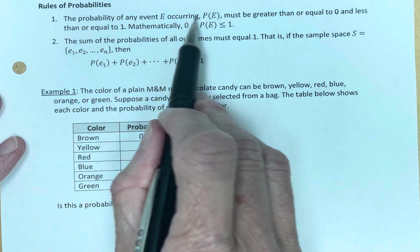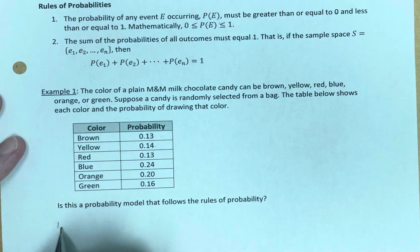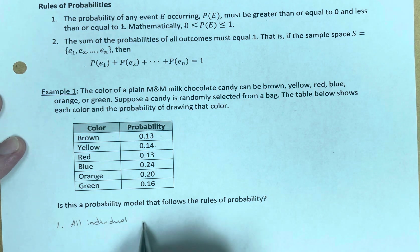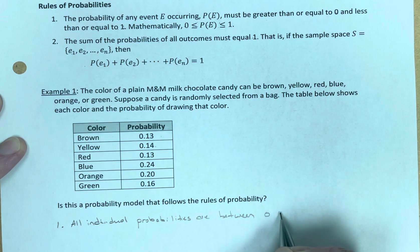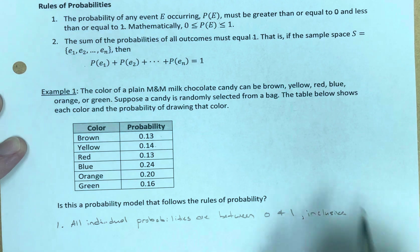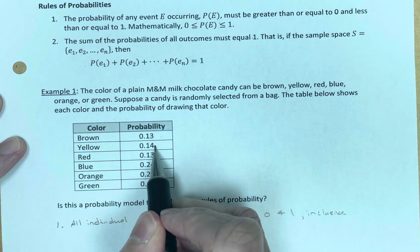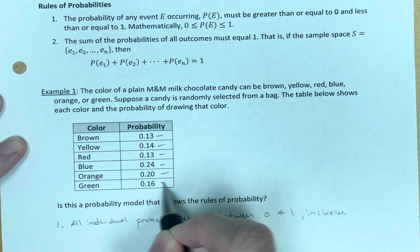Rule number one. The probability of any event occurring must be greater than or equal to zero and less than or equal to one. So rule one. All individual probabilities are between 0 and 1 inclusive. Let's see. This is between 0 and 1, between 0 and 1. We can check these off. Between 0 and 1, between 0 and 1. The answer is yes.